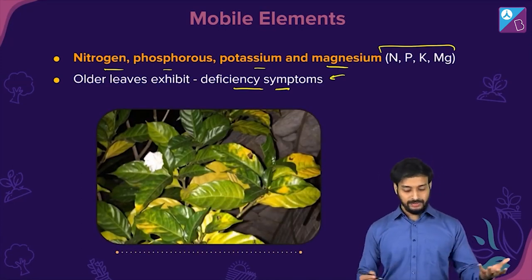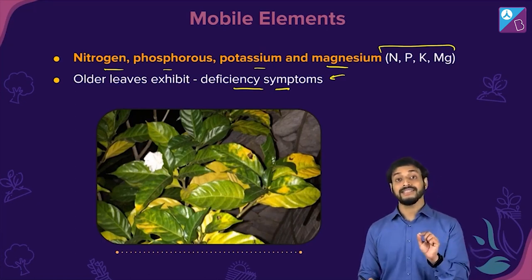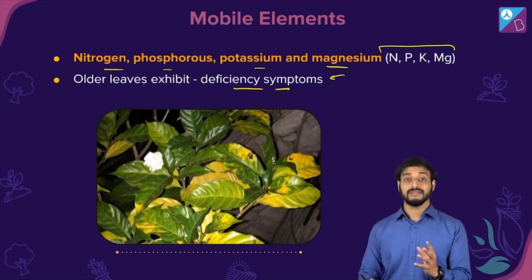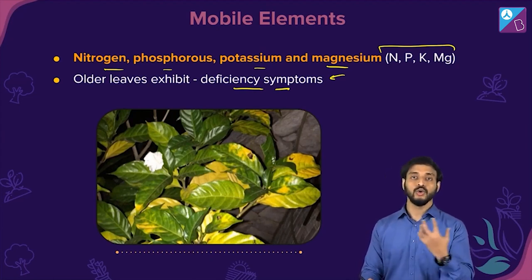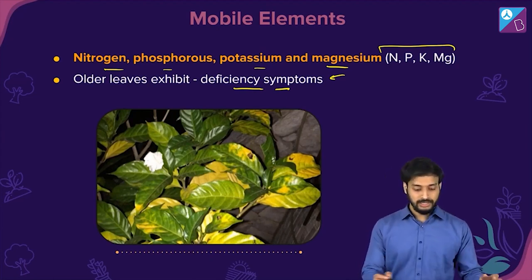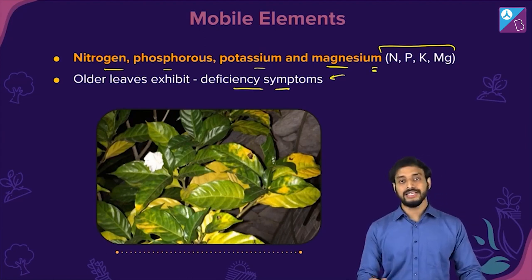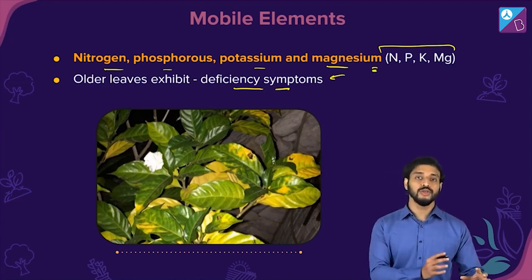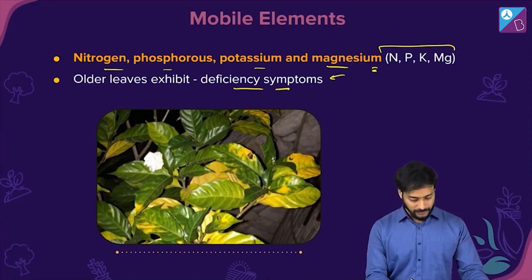You can see the yellowing of the older leaves — they are sacrificing, giving their own elements that they could have used, to the newer leaves. That's amazing plant behavior.